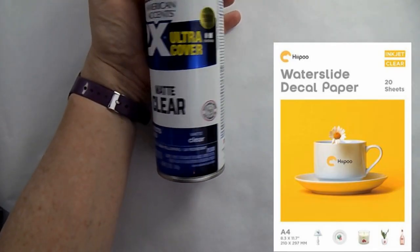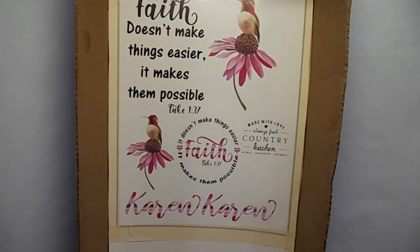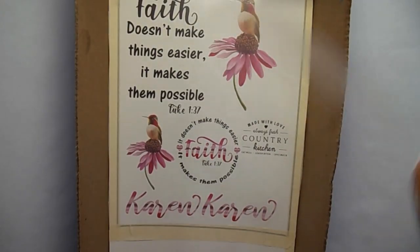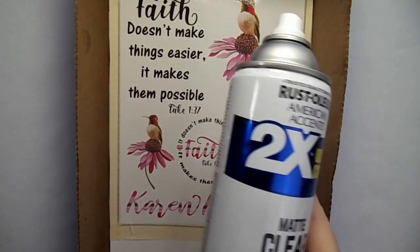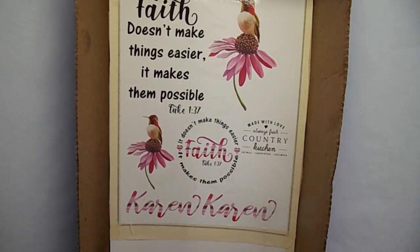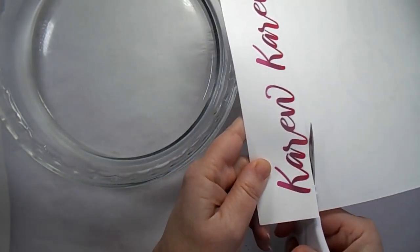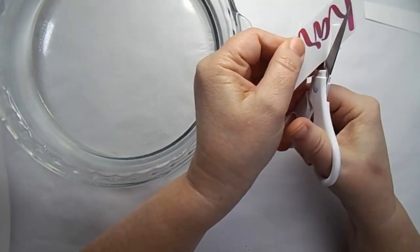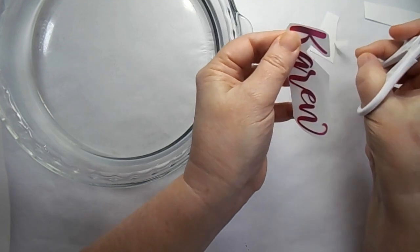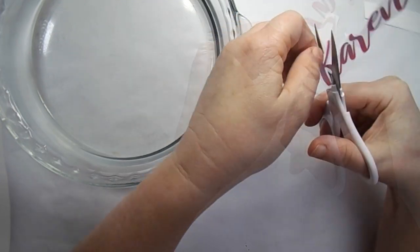You'll start out with this Hippo Waterslide Decal Paper and just use an inkjet printer and print it out on the best quality. Then I took this clear spray and sprayed it over the top with three coats. Once it was dry I just cut them out. Don't forget to give it at least 10 minutes to a half hour for each coat to dry.